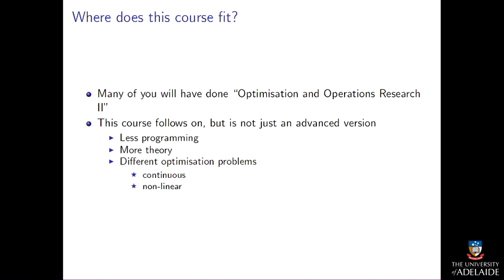Many of you, not all of you, will have done optimization and operations research too. It's fine if you haven't — we'll review it. This course sort of follows on from that, but it's not just a more complicated version. It's got a bit less programming, it's a bit more theoretical, and it talks about different optimization problems. Operations research talked about, I think, all discrete types of optimization problems, whereas this course is largely continuous and not linear.